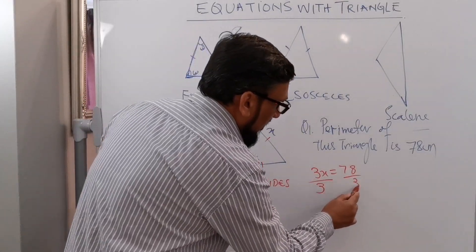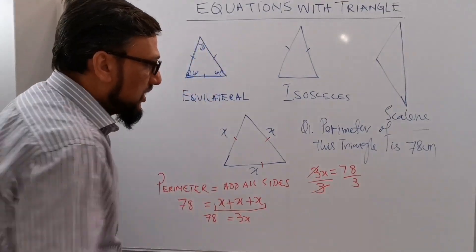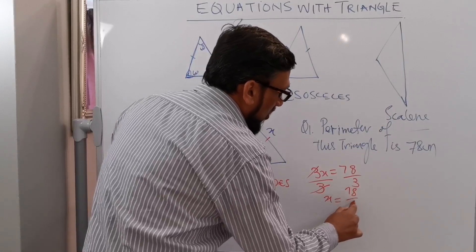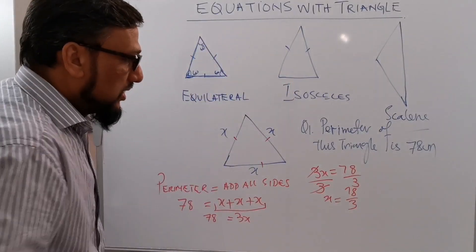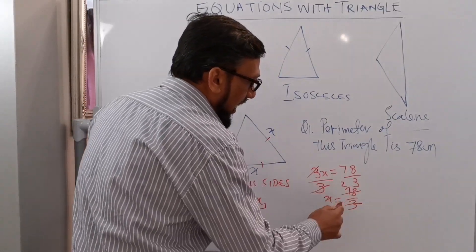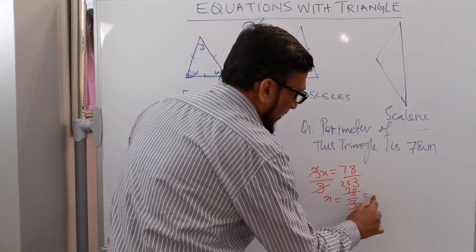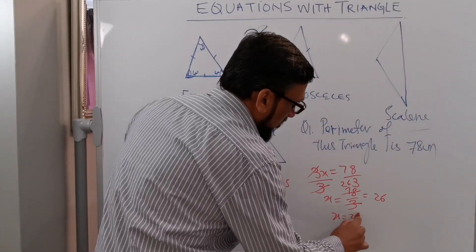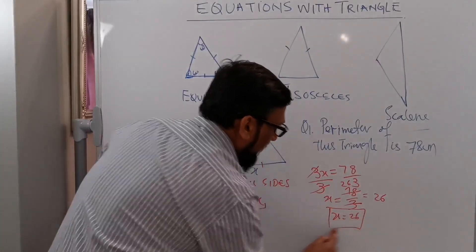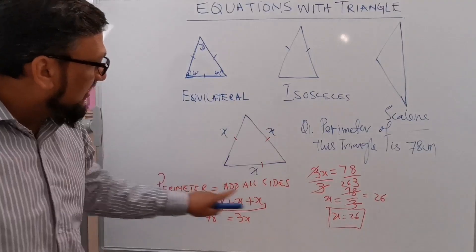I need to get rid of this 3, so I'm dividing both sides by 3. The 3 on the left cancels, so x equals 78 over 3. Since 3 times 26 is 78, we get x equal to 26. So we've found the unknown which is x.